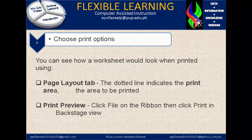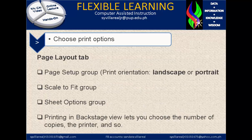Let's proceed with the Print Preview. Click File on the ribbon, then click Print in the Backstage View. Let's check out the Page Layout tab. We have the Page Setup Group, the Print Orientation — Landscape or Portrait — the Scale to Fit Group, the Sheet Option Group, and Printing in the Backstage View lets you choose the number of copies, the printer, and so on.